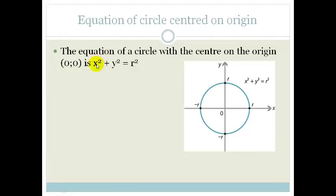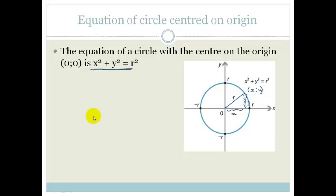The circle with the center on the origin is given by the equation x squared plus y squared equals r squared. This can be worked out by the fact that every point on the circle can be described by an x value and a y value. That point is (x, y) and the distance from the center is r. Using Pythagoras, we get x squared plus y squared equals r squared. That is the equation of the circle if the center is on the origin.